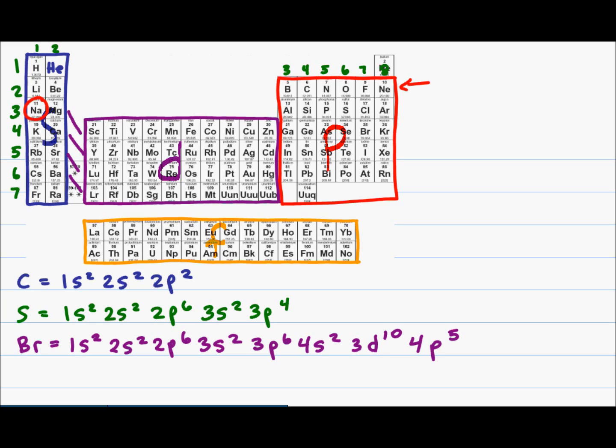then instead of writing the entire long address, you can write the noble gas followed by valence electrons. How can we justify this? Everything inside beneath the valence electrons is called your kernel.